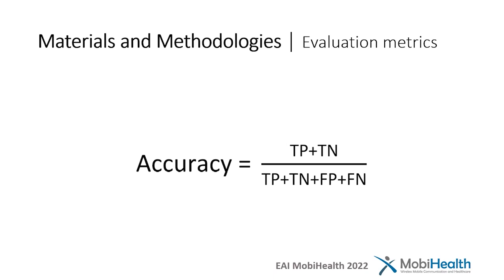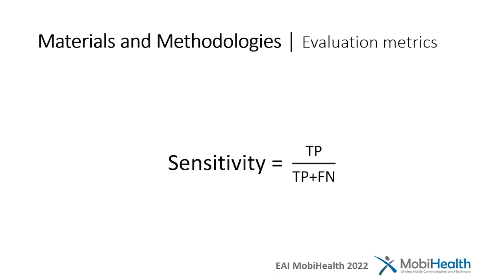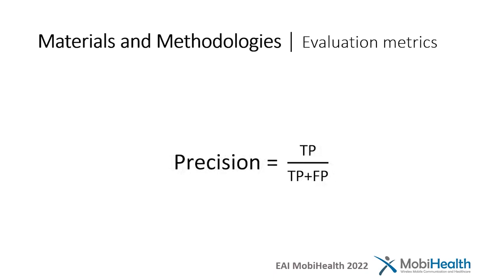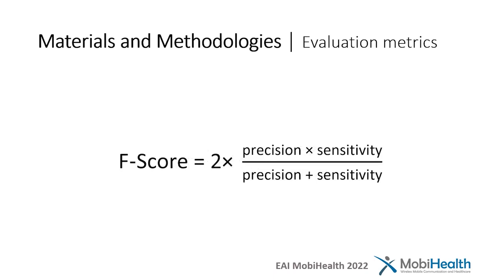Evaluation of a classification model is done by comparing the classes predicted by the model with the true classes of each example. All classification metrics have the common goal of measuring how far the model is from perfect classification. In this work, we used five classification metrics. Accuracy tells how many examples were classified correctly regardless of class. Sensitivity evaluates the method's ability to successfully detect positive results. Specificity, on the other hand, evaluates the ability to detect negative results. Precision evaluates the number of true positives over the sum of all positive values. And F-score is a harmonic mean calculated based on precision and recall.